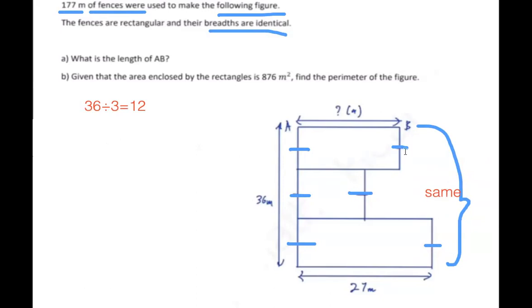So now we know that this is 12. We label it. Now we want to find out what's the length of AB.